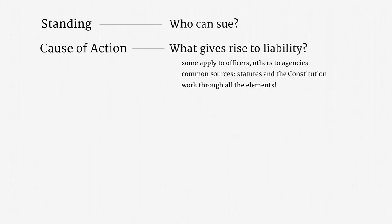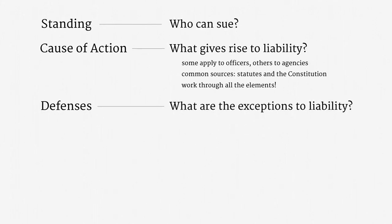If even just one element is missing — say, particular surveillance was accidental instead of knowing — then there is no good legal claim. Affirmative defenses are exceptions from legal liability. The defendant is arguing that even if he or she satisfied all the elements of a cause of action and otherwise would be totally on the hook, there is a separate bar to liability. In this course, defenses are a lot like causes of action: their sources are primarily the constitution and statutes, and you have to carefully work through all the elements before concluding that a defense is viable.